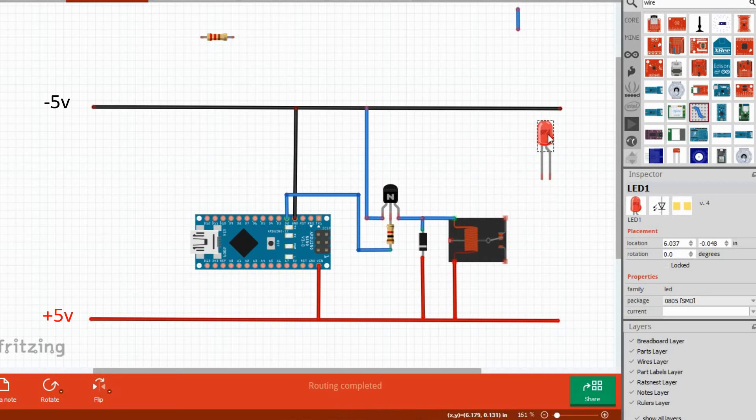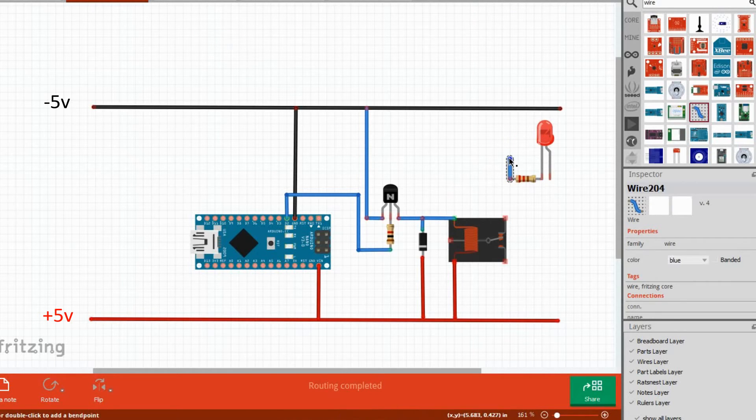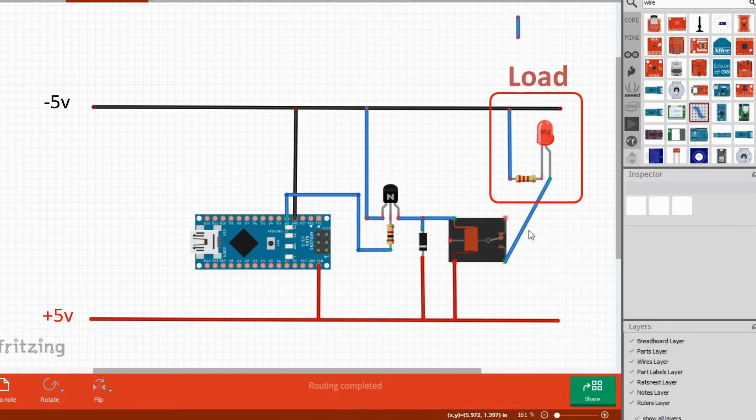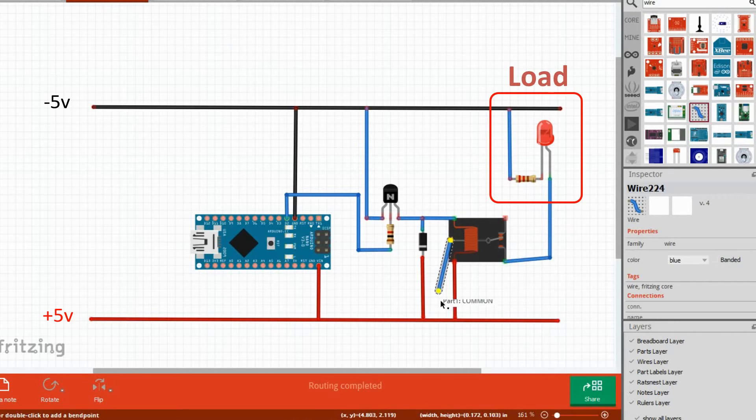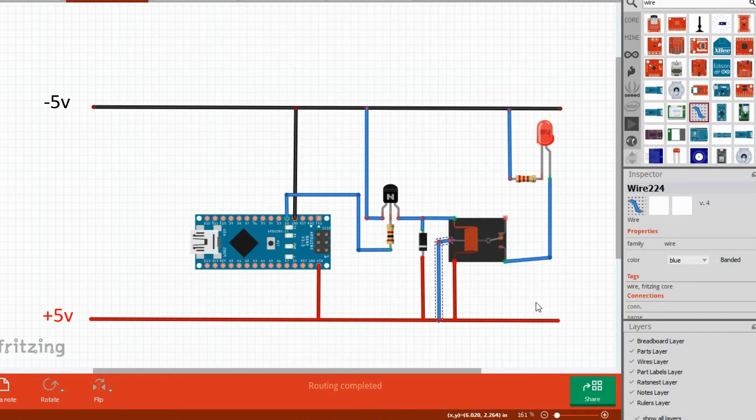The electromagnet then pulls the switching contact and moves it to connect the common terminal to the normally open terminal. Once the normally open terminal is connected, a lamp or any other load can be turned on. In this example, I'm just turning on and off a LED.